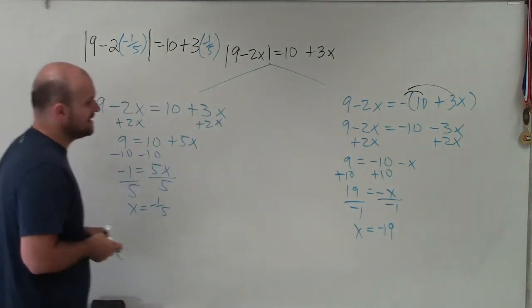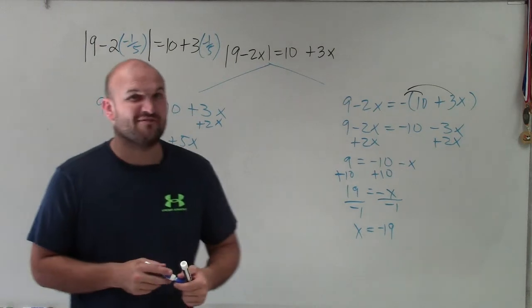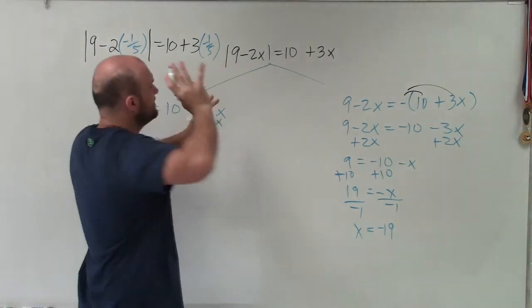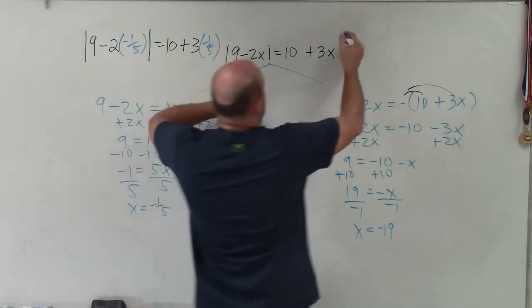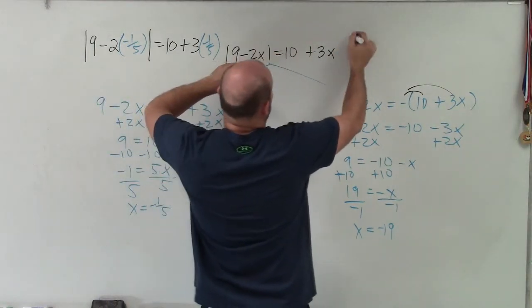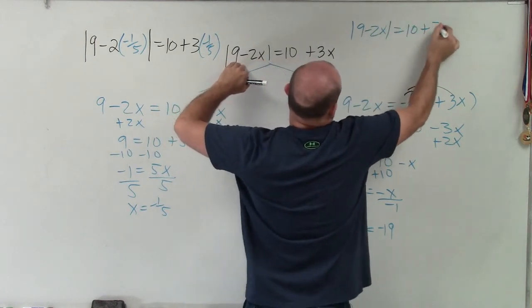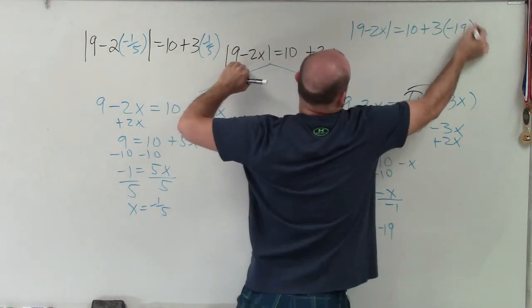Now automatically, when I see a negative number, I kind of have like a red flag, right? Because think about this. So when I go ahead and check my answer, before I even getting into checking my answer, before I even plug it in for here, I know that absolute value of 9 minus 2x is equal to 10 plus 3 times a negative 19.